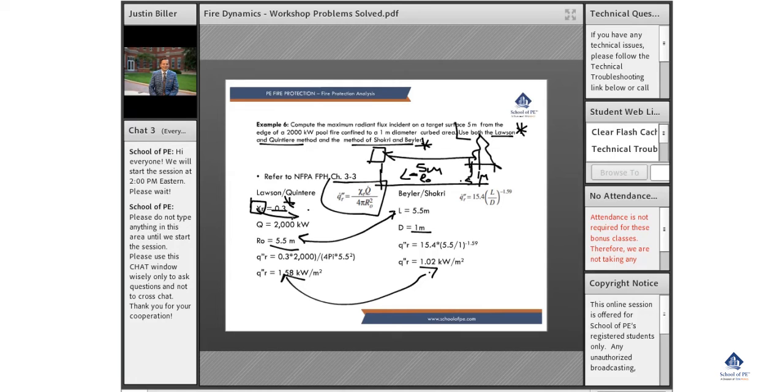Diameter totals one meter. Working this out, we're raising it to the negative 1.59 power. So using the Beiler-Shokri method, you have just about a kilowatt per square meter.